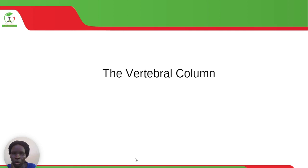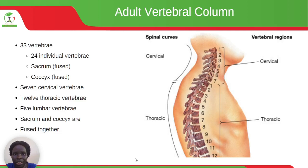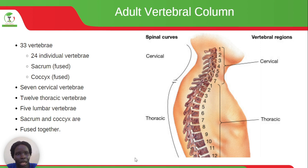Let's look at the vertebral column. The vertebral column consists of 33 vertebrae, with 24 individual vertebrae, the sacrum which is fused, and the coccyx which is fused. In simple terms, it can be divided into 7 cervical vertebrae, 12 thoracic vertebrae, 5 lumbar vertebrae, and the sacrum and coccyx which are fused together.